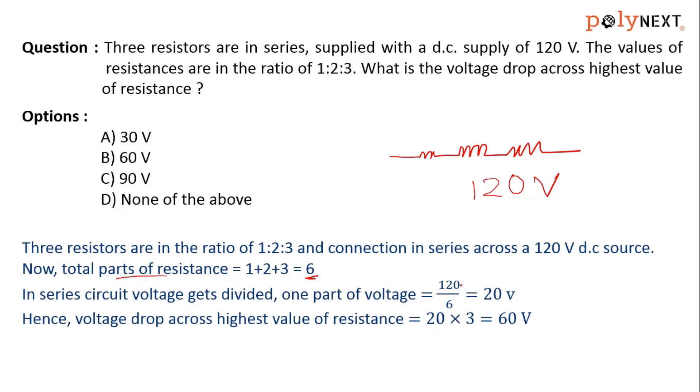120 volts supply voltage by total parts, which is 6 (1 plus 2 plus 3 equals 6). So one part of voltage is 20 volts. Now voltage drop across highest value of resistance is 20 times 3.